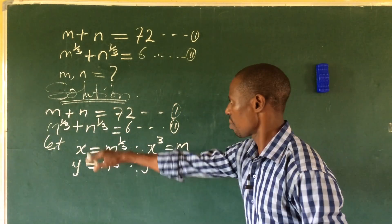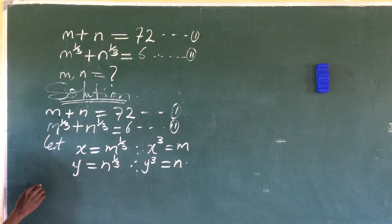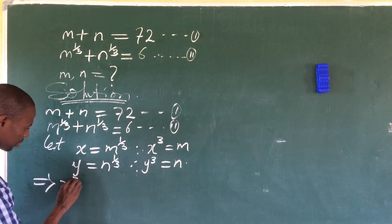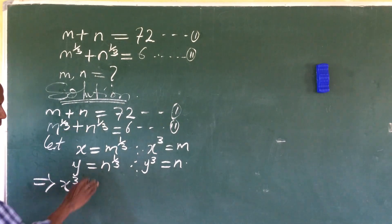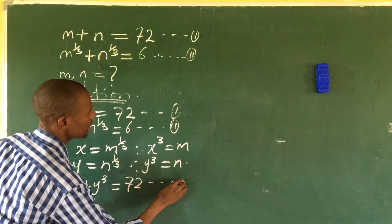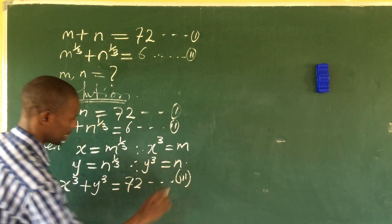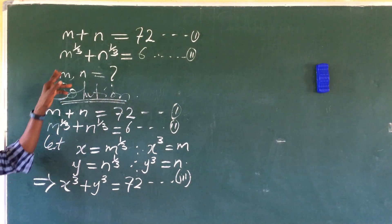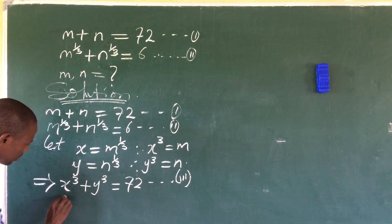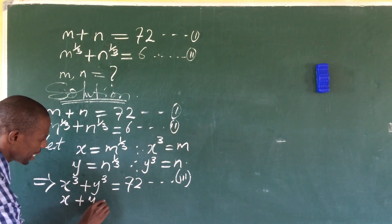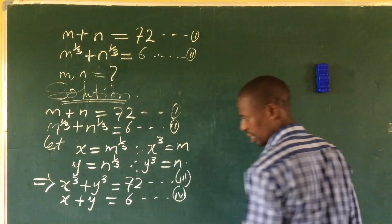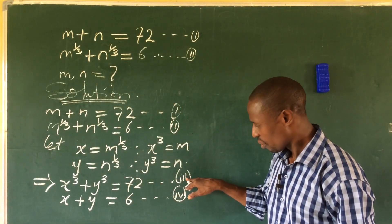Now we substitute x and y into our initial equations. Equation one becomes x³ + y³ = 72 (equation three). For equation two, since m^(1/3) = x and n^(1/3) = y, we get x + y = 6 (equation four).